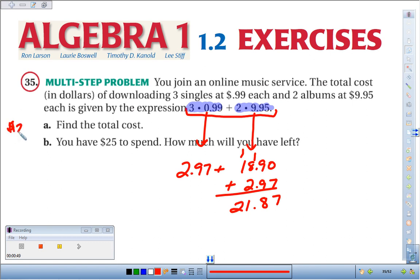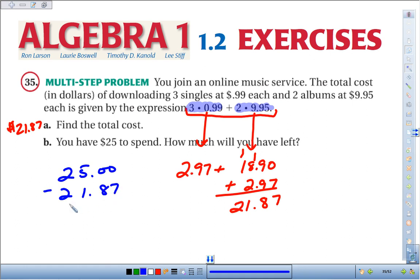For our total cost in Part A. And we have $25 to spend, so how much will we have left? We'll take that $25 and take away the $21.87 that we spent.